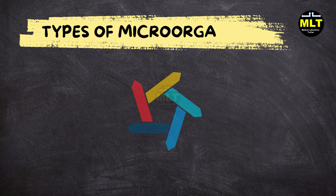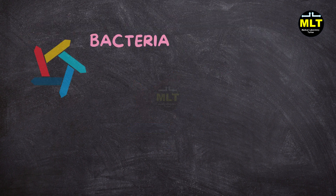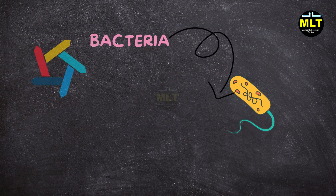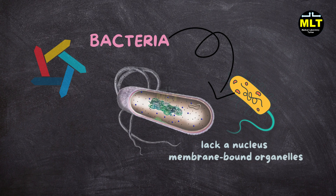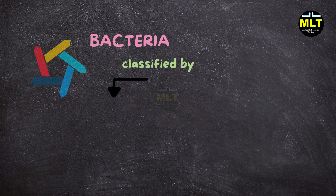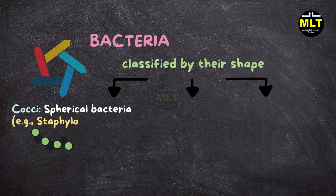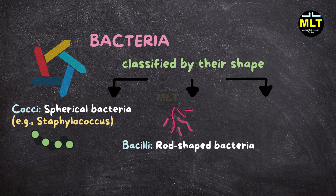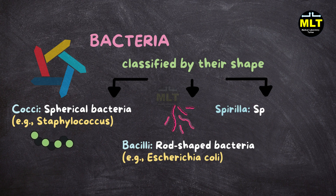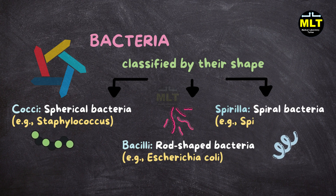Types of microorganisms. Bacteria structure. Bacteria are prokaryotic organisms, meaning they lack a nucleus and membrane-bound organelles. They typically have a rigid cell wall composed of peptidoglycan, and they can be classified by their shape: Cocci — spherical bacteria, example Staphylococcus; Bacilli — rod-shaped bacteria, example Escherichia coli; Spirilla — spiral-shaped bacteria, example Spirillum.